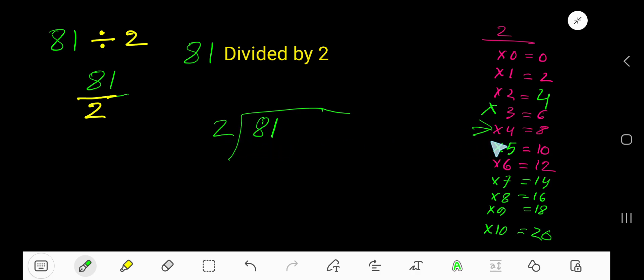into 8 how many times? 4 times. 2 times 4 is 8, so 4 times. Now multiply 4 times 2, which is 8. Subtract, you are getting 0. Bring down this 1. 2 goes into 1 how many times? Since 1